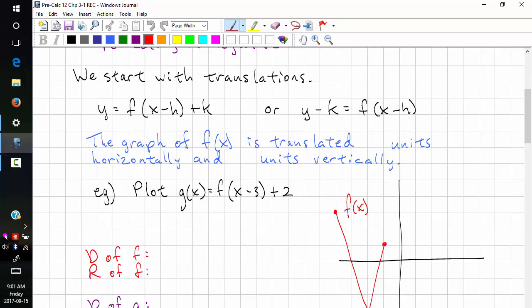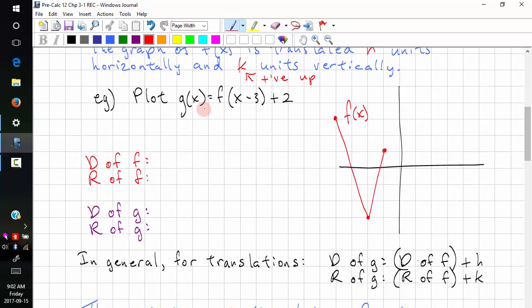The graph of f of x is translated h units horizontally, and positive is to the right, just like in the quadratics. And k units vertically, and positive is up. Let's look at an example. We're going to plot g of x equals f of x minus 3 plus 2. This means h equals 3, k equals 2. This is right, and this is up.